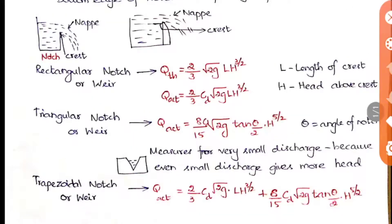Both notches and weirs are used for calculating the discharge happening in a channel or tank. When the flow is very high, like in a river, we use a weir. Whereas for a small tank, or to find the flow in our laboratories, we use notches. In all our laboratories we have notches. So when a small quantity of water is flowing, we use notches for calculating the discharge.